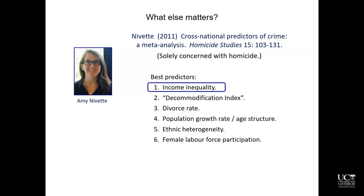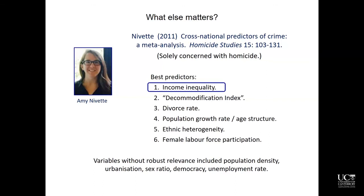There were other significant predictors: divorce rate; population growth rate or age structure — essentially the same thing, because when population is growing, the proportion that is young tends to be high; ethnic heterogeneity, where homogeneous countries tend to have lower homicide rates; and female labor force participation. According to Nevette's meta-analysis, a number of things people have claimed are important didn't come out robustly: population density, urbanization, sex ratio, democracy, and unemployment rate — none of these shook out in Nevette's analysis.